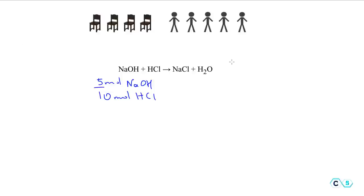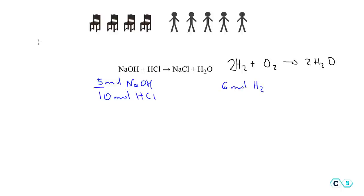For example, looking at this reaction of hydrogen with oxygen producing water — once we balance it — imagine we have 6 moles of H₂ and 4 moles of O₂. Oxygen is 4 moles and hydrogen is 6 moles, so you might think oxygen is the limiting reactant, but it turns out that it's not.